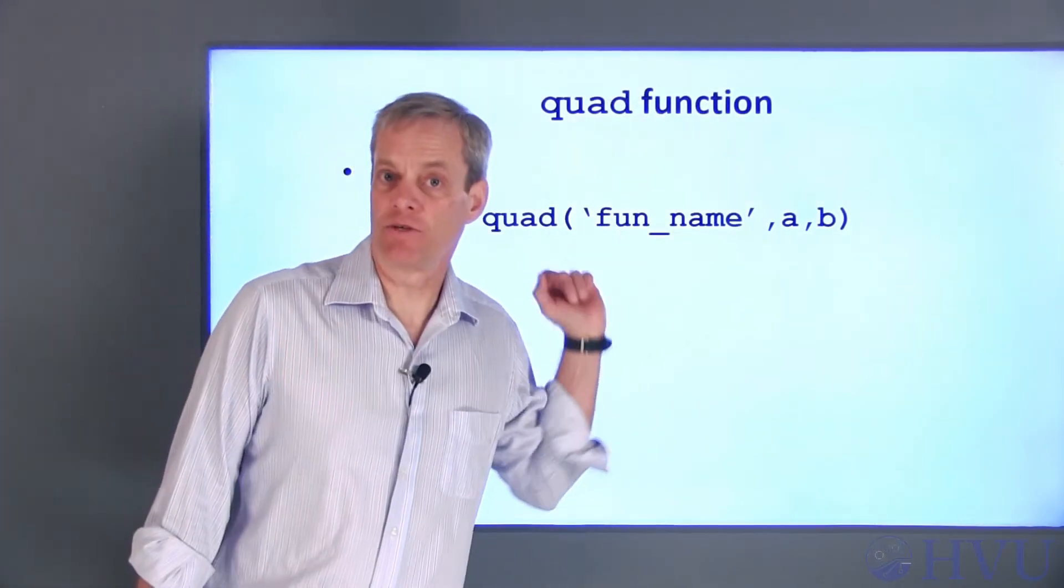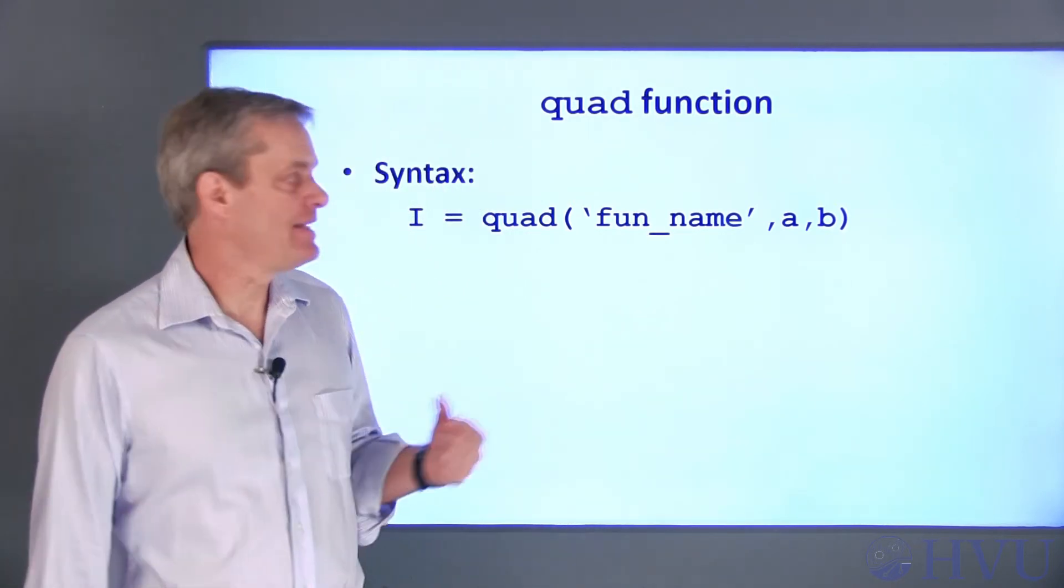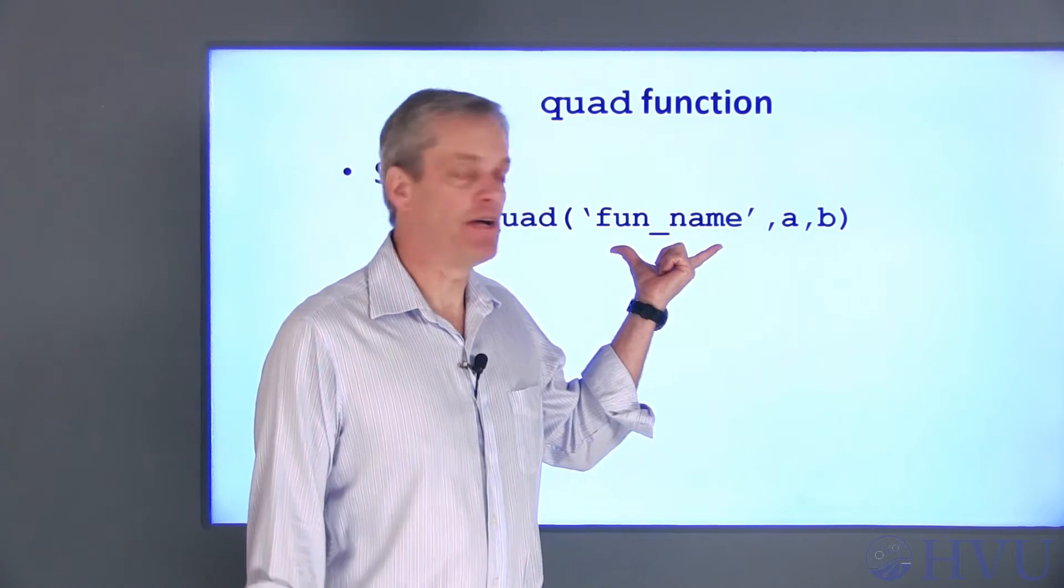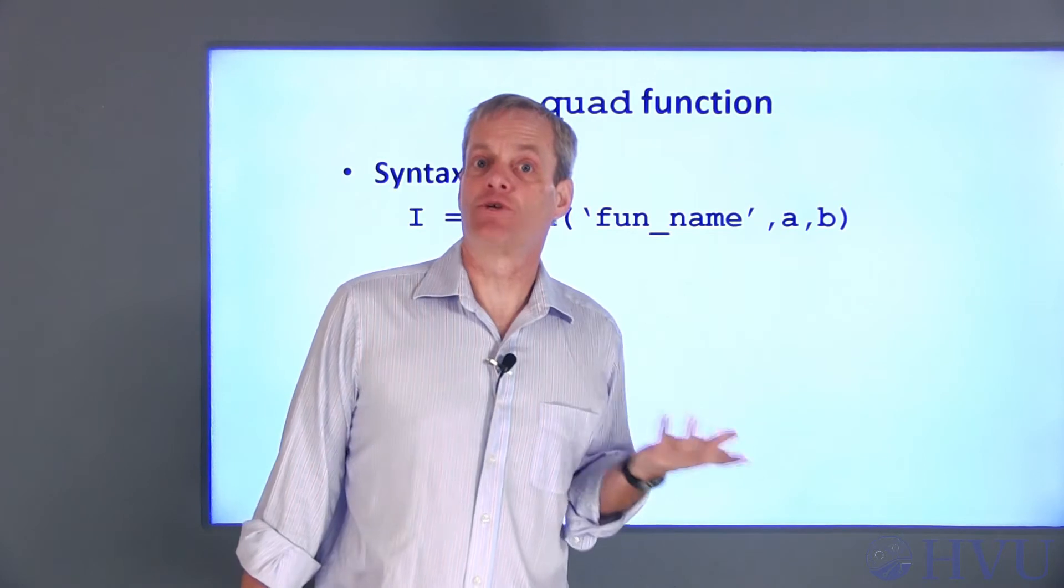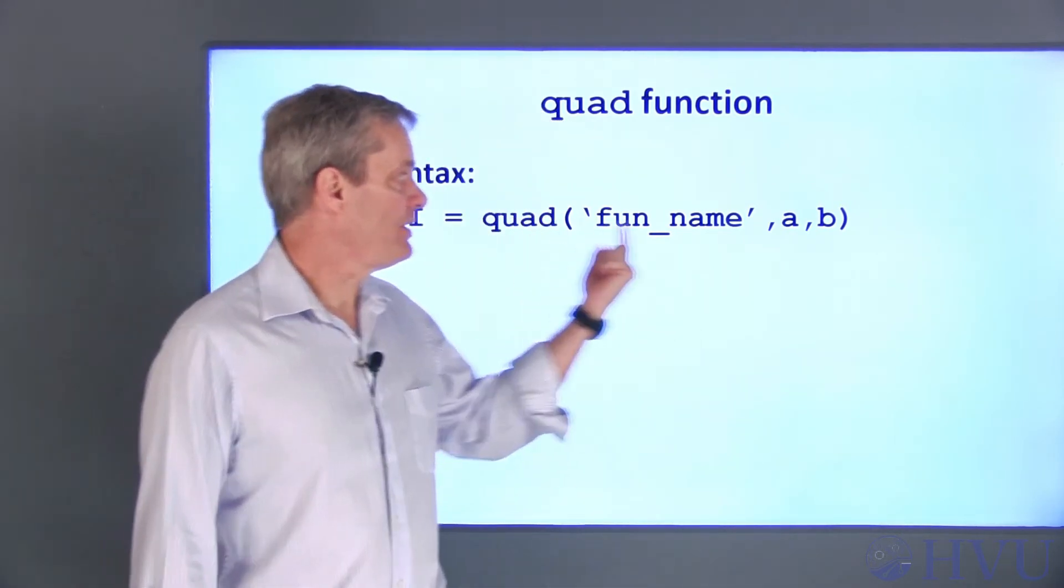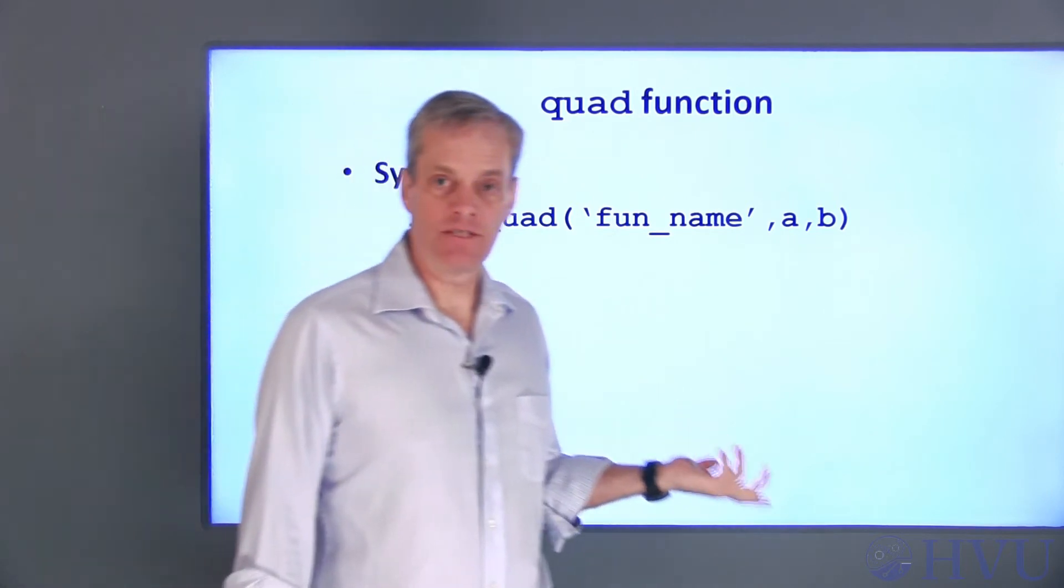This is the basic syntax for the Quad function. In this example, the function to be integrated is in an M file named fun_name. That name, without the dot M, is the first argument to the Quad function and is placed in single quotes. The second and third arguments are the limits of integration.